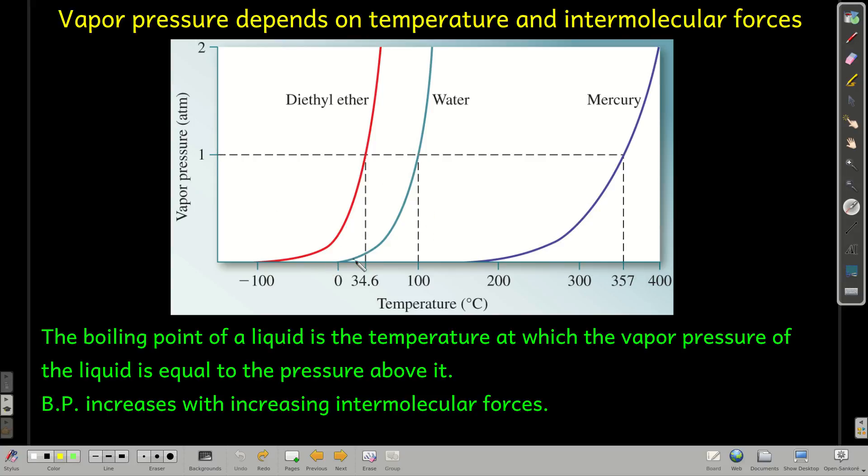If you look at this graph, vapor pressure versus temperature, we pick some temperature and look at the vapor pressure of water compared to diethyl ether, we can see that the vapor pressure of diethyl ether is higher at that temperature than for water. Weaker intermolecular forces mean higher vapor pressure. Stronger intermolecular forces mean lower vapor pressure at a given temperature. Remember that.